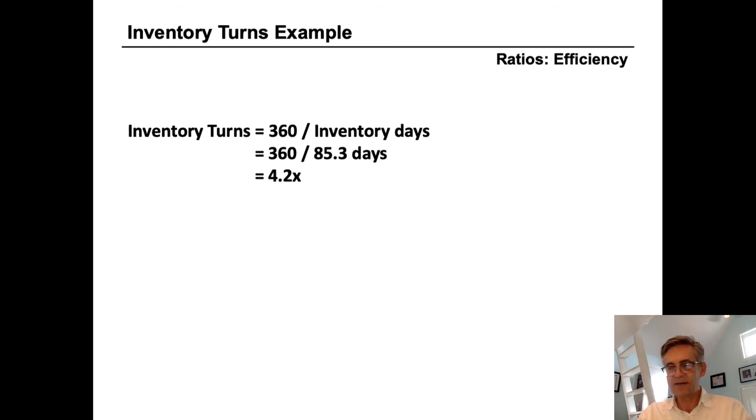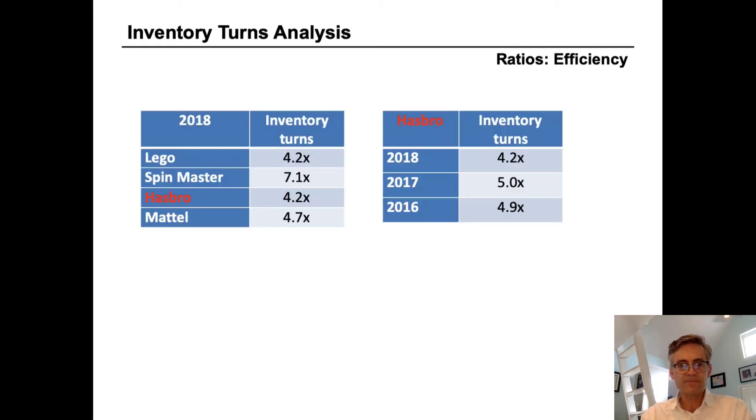So let's take a look at how Hasbro stacks up with their peers in the same industry. So Hasbro is at 4.2, Lego is also at 4.2, Mattel is at 4.7. Spinmaster is the outlier here at a very fast 7.1 times inventory turns in 2018. And one would question maybe Spinmaster is turning too fast and losing some sales due to stock outs.